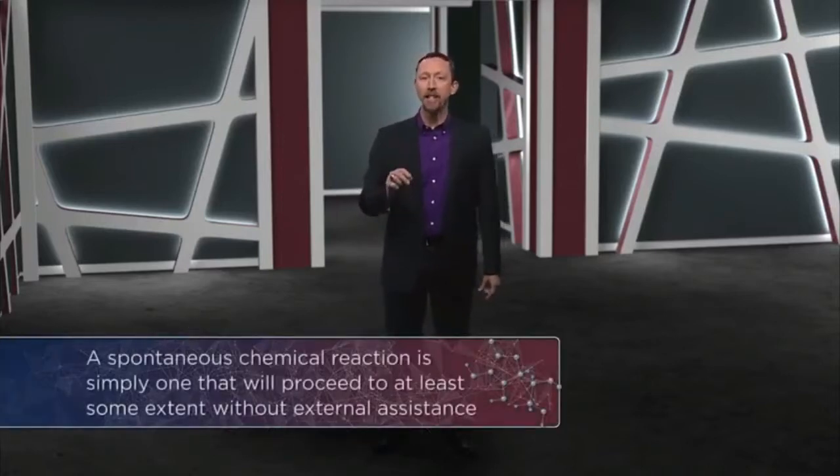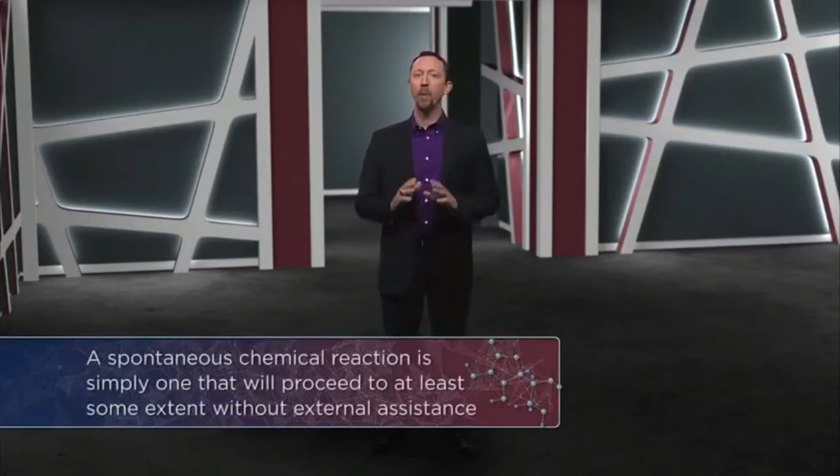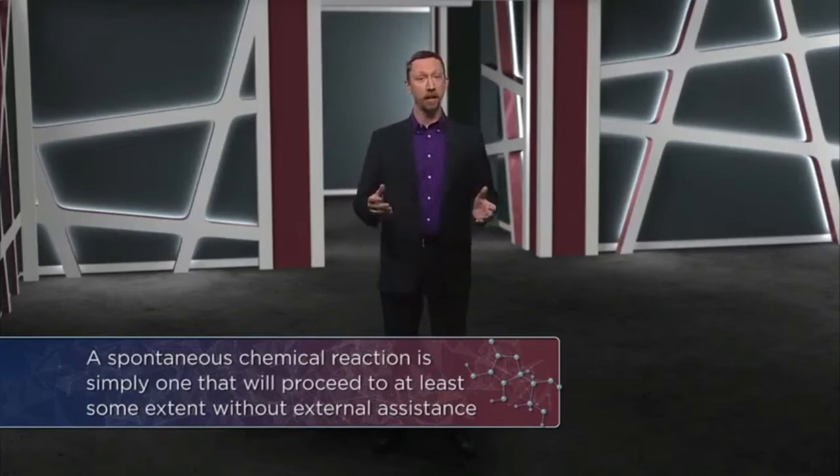Before we get to the battle royale between enthalpy and entropy, let's define a new term. Yet another term which has a common meaning, but a little different than that used by chemists. I'm talking about spontaneity. The term spontaneity often invokes thoughts of something starting or happening quickly. But when chemists use the term spontaneous, they aren't referring to speed at all. A spontaneous chemical reaction is very simply one that will proceed to at least some extent, without any external assistance. That's it. It doesn't matter how slowly a process happens. It can happen all by itself. It counts. It is spontaneous.